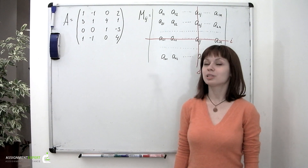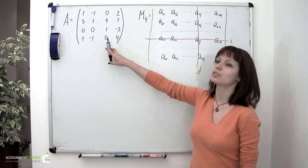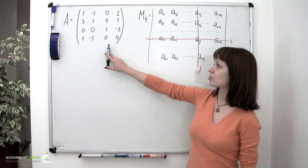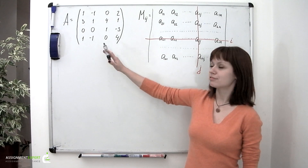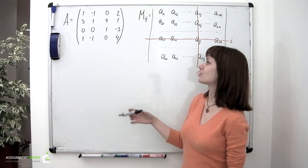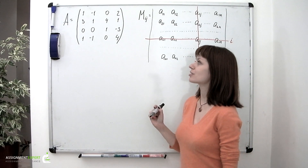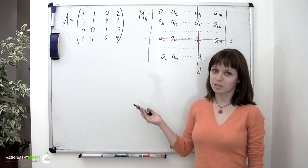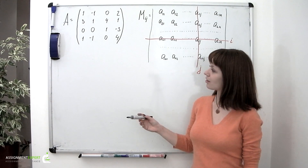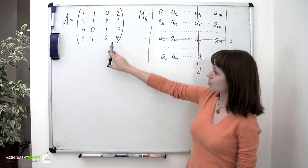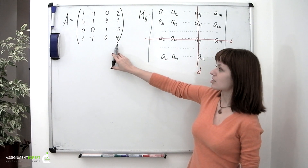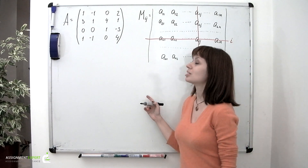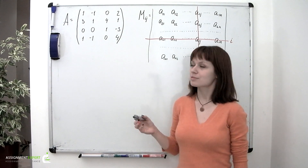Let's find a determinant of the given matrix. First of all, we should check if the given matrix is a square matrix, since determinants only exist for square matrices. Our matrix is of the size 4 by 4, which means things are all right and a determinant can be found.